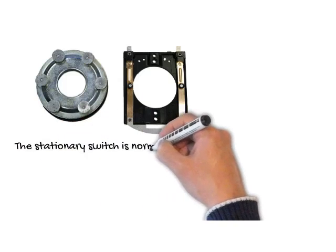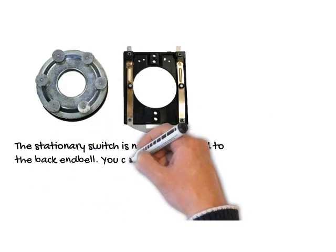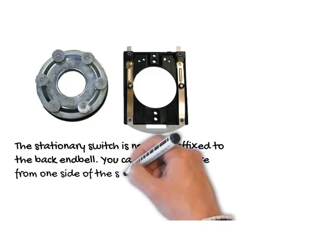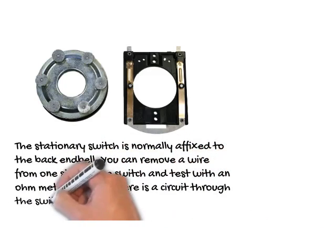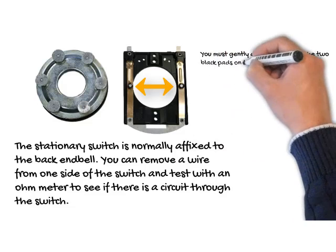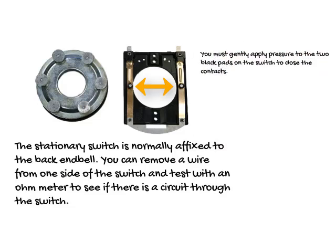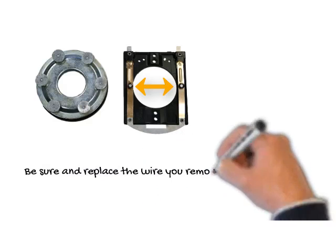The stationary switch is normally affixed to the back end bell. You can remove a wire from one side of the switch and test with an ohmmeter to see if there's a circuit through the switch. You must gently apply pressure to the two black pads on the switch to close the contacts.